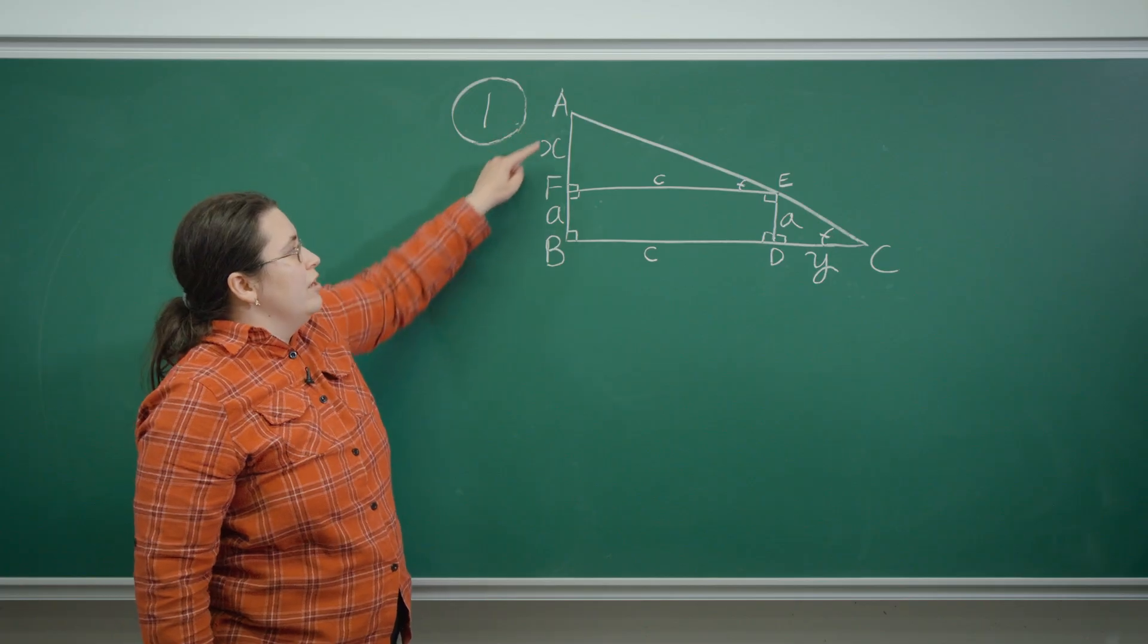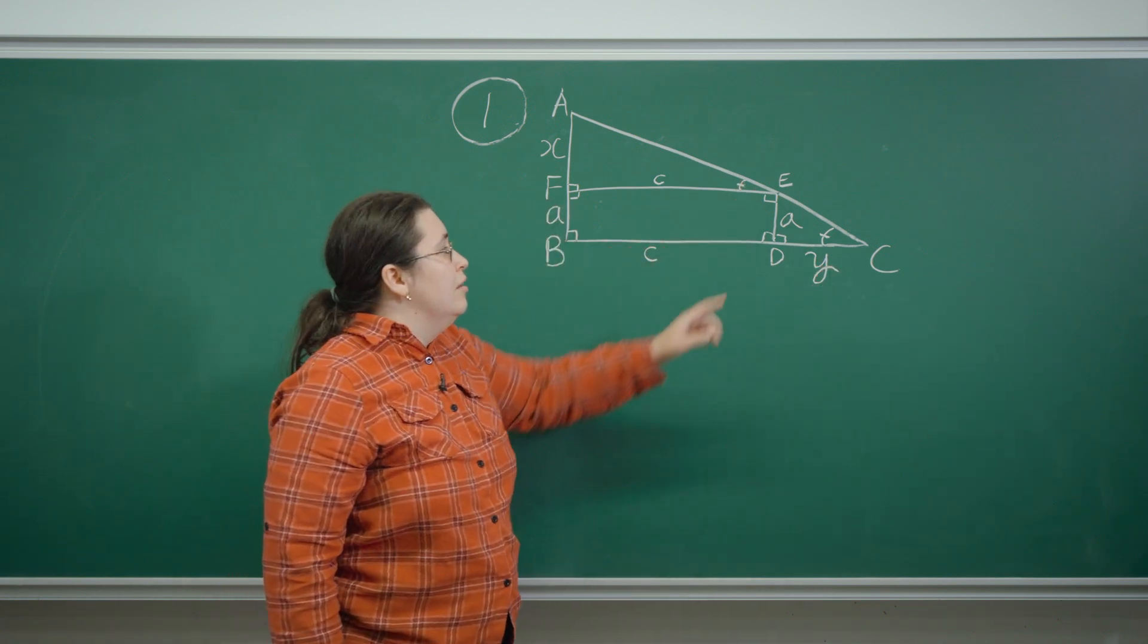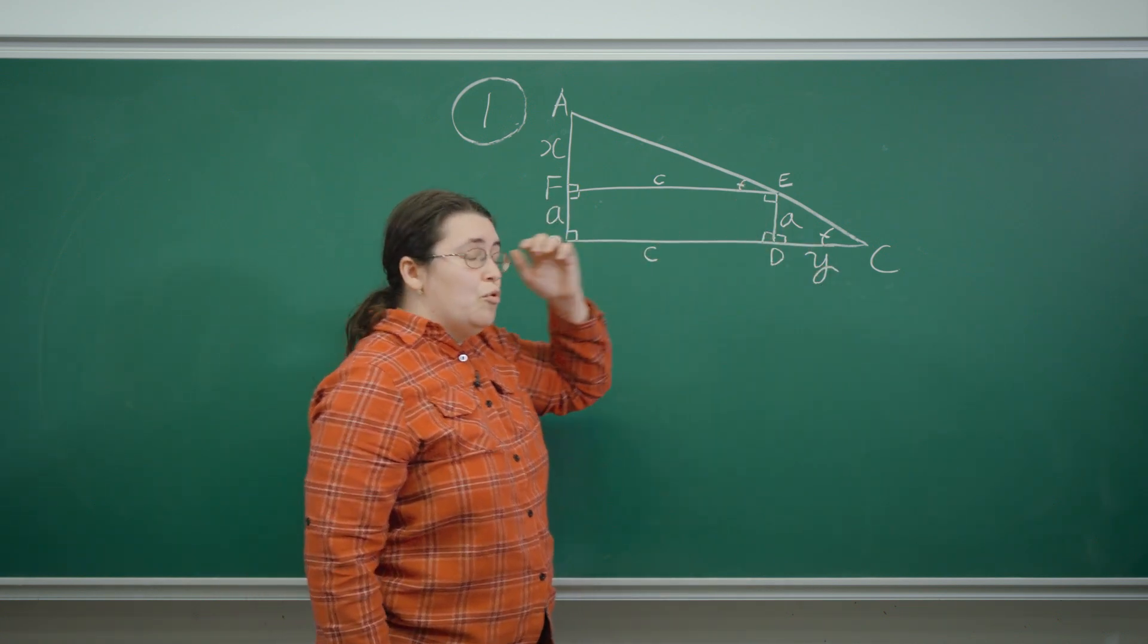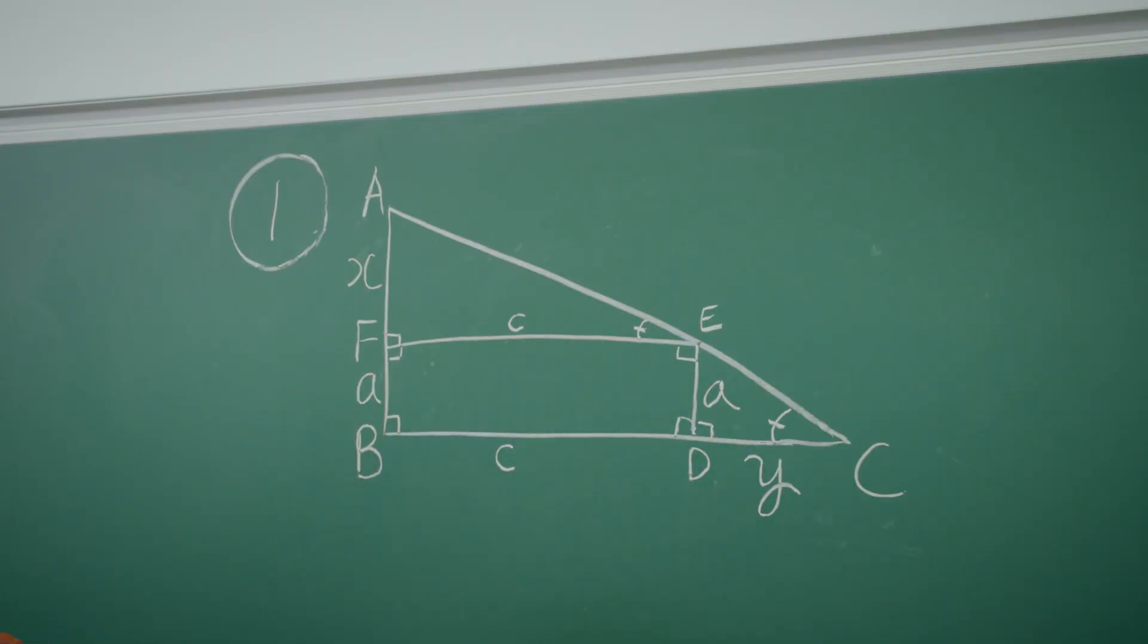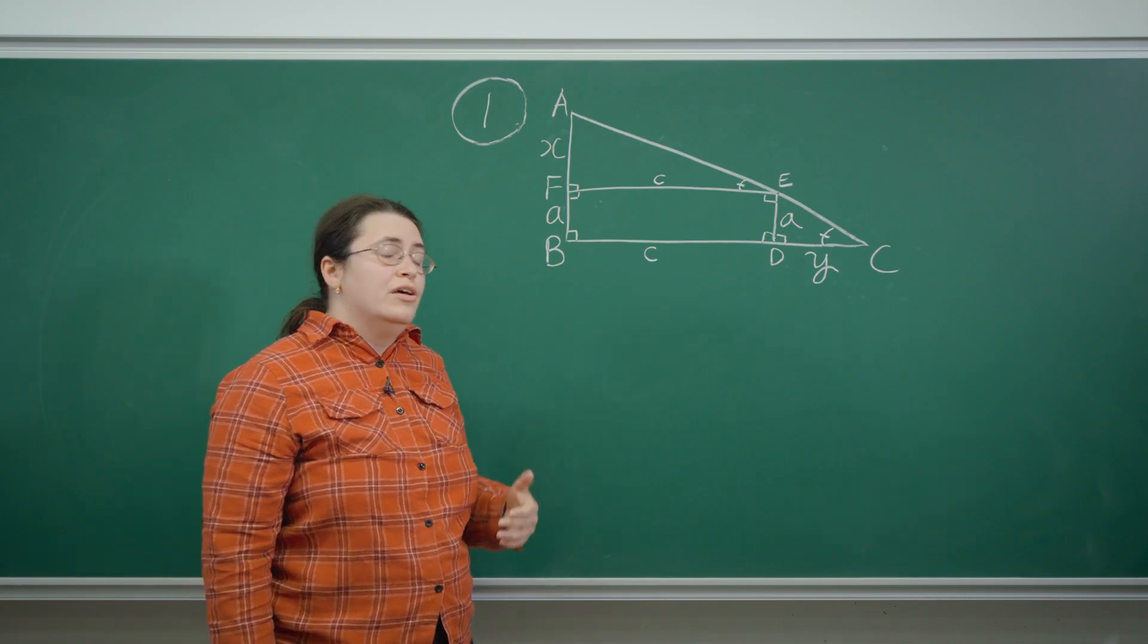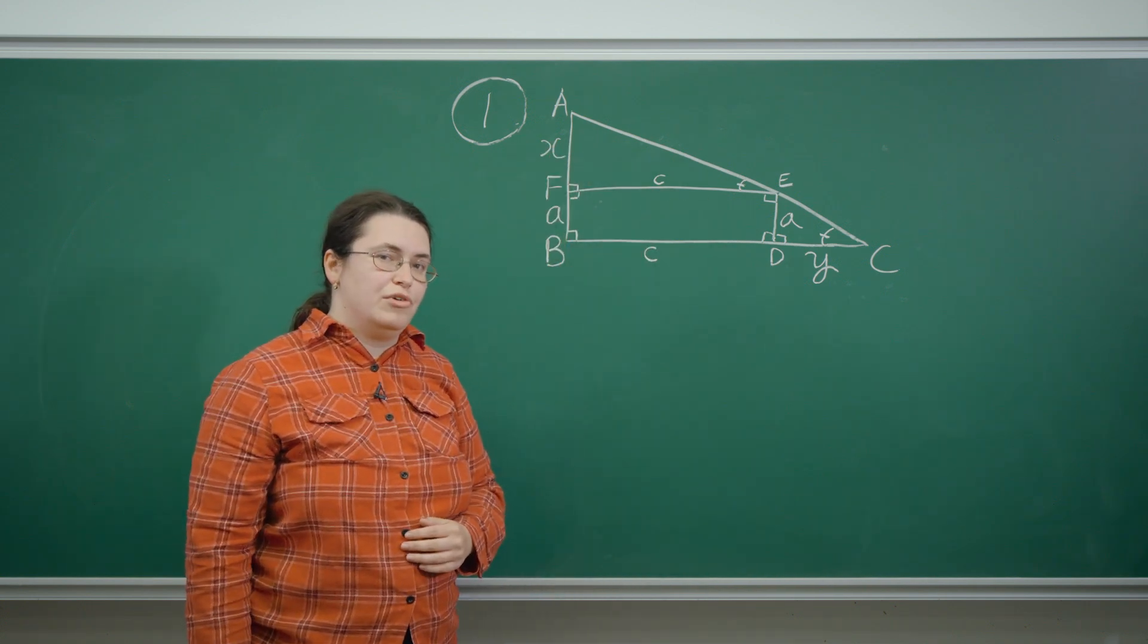The triangles AFE and EDC are therefore similar because they share all three angles. We've shown explicitly that two of them are equal and the third one simply completes them so that the angle sum is 180 degrees.